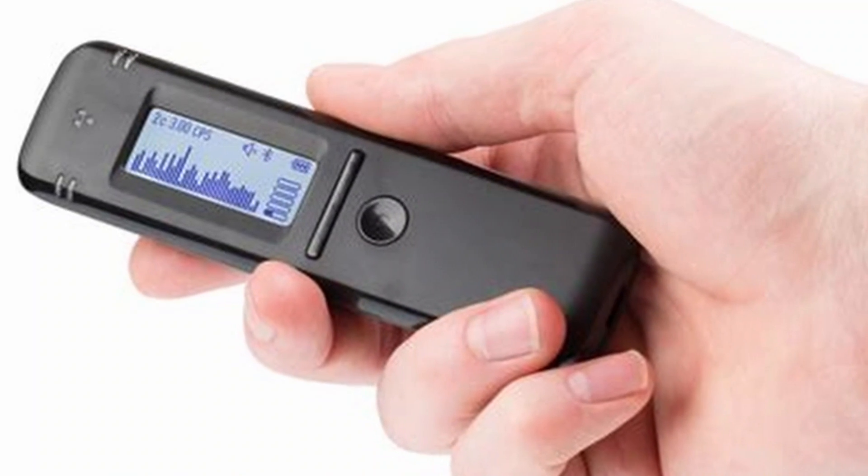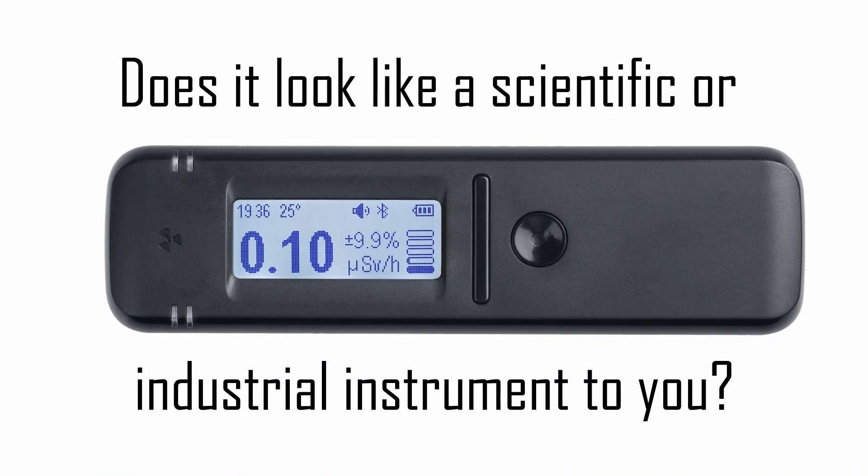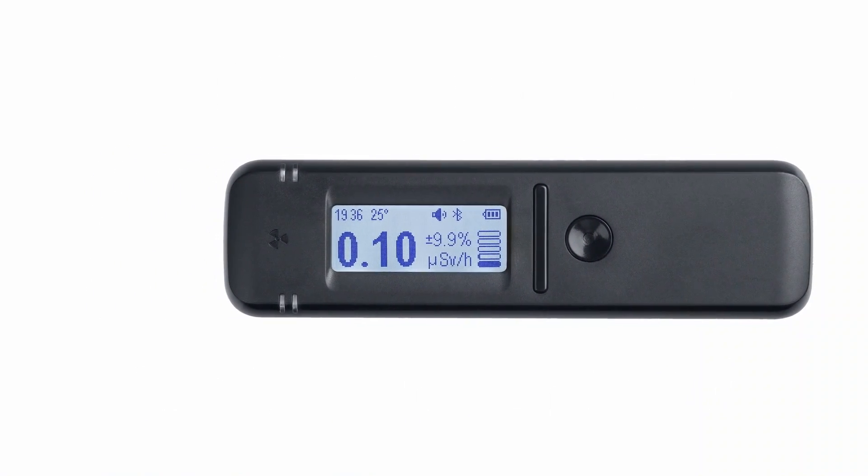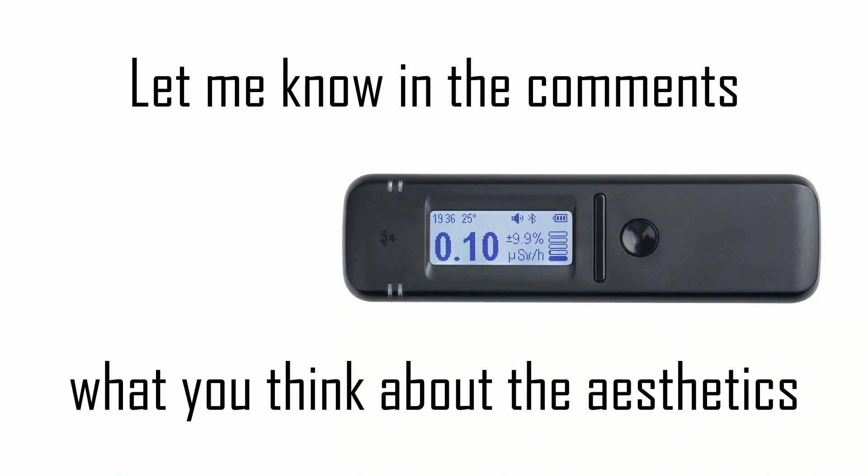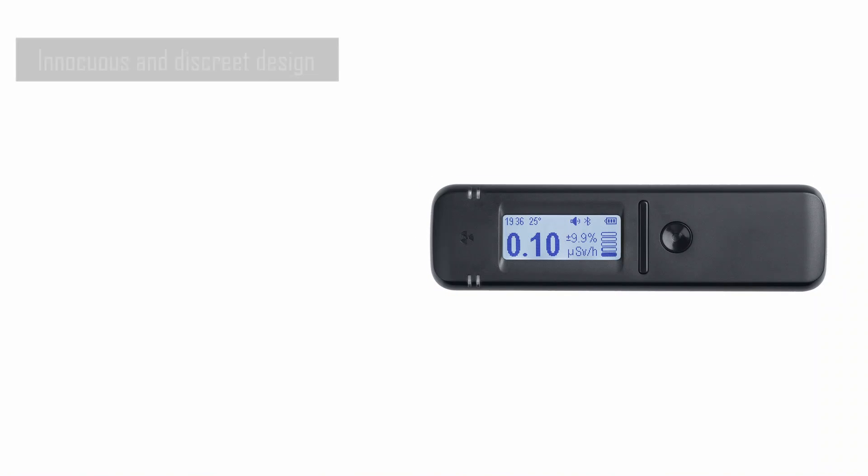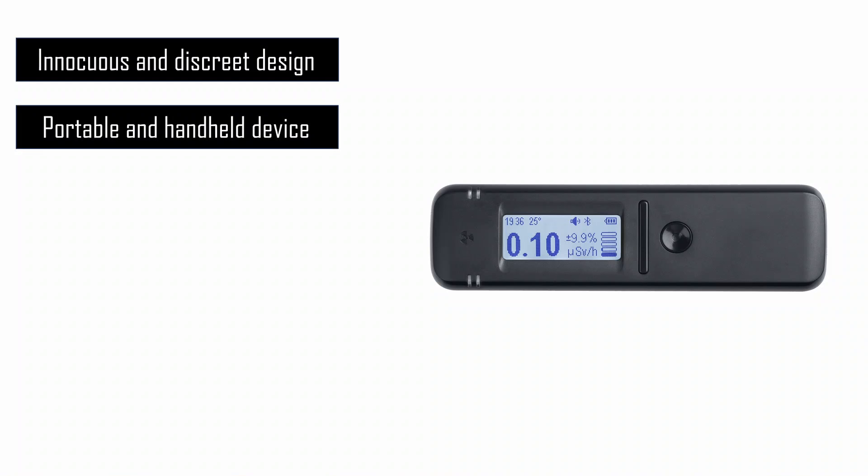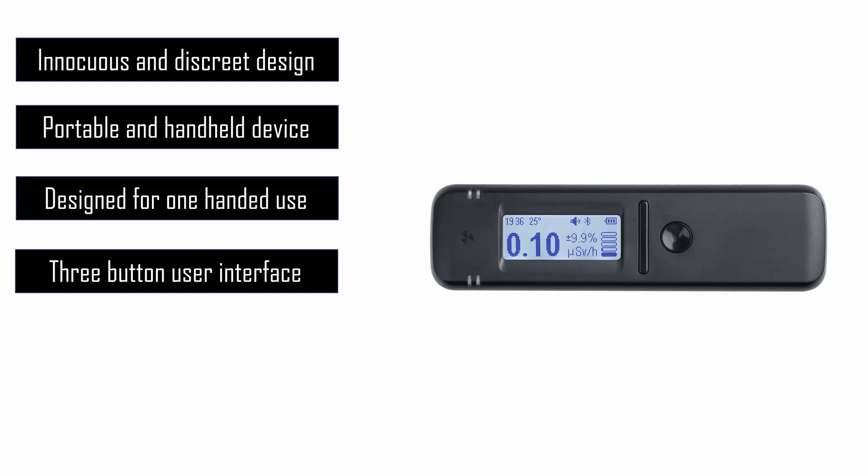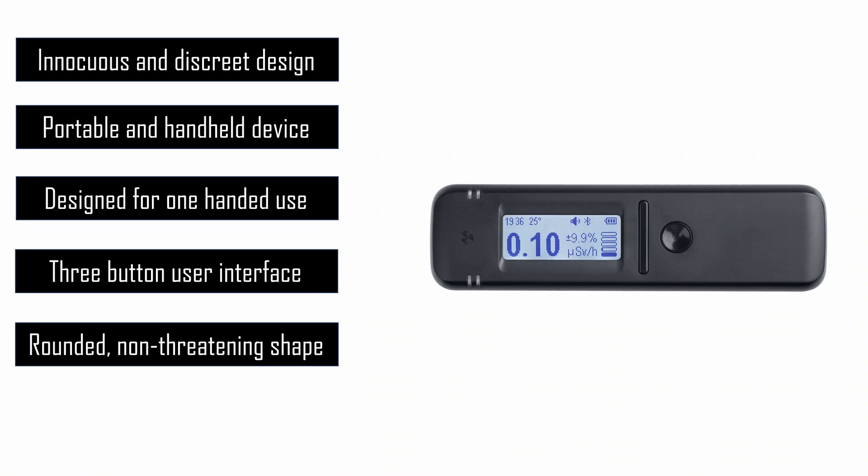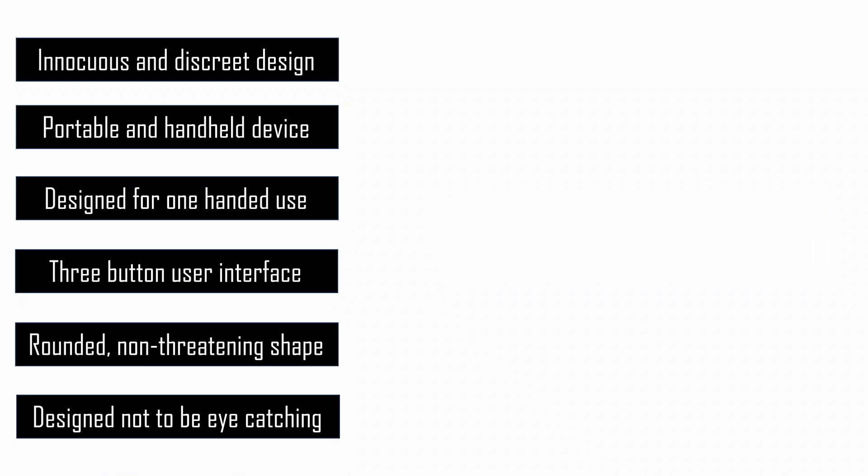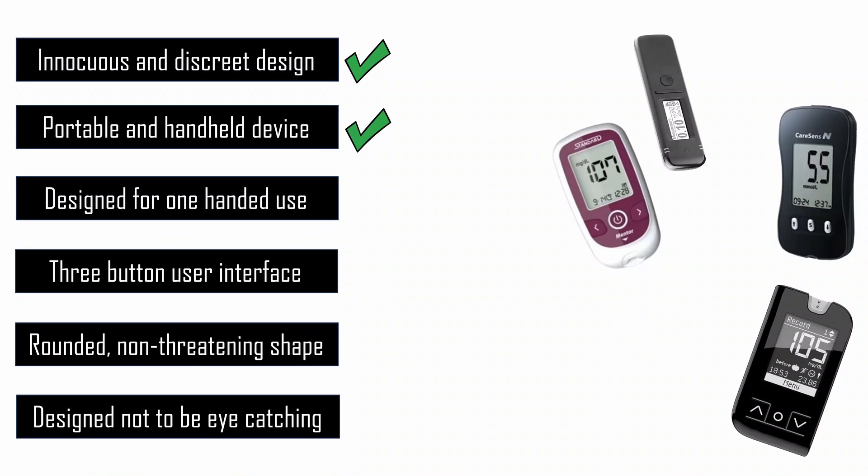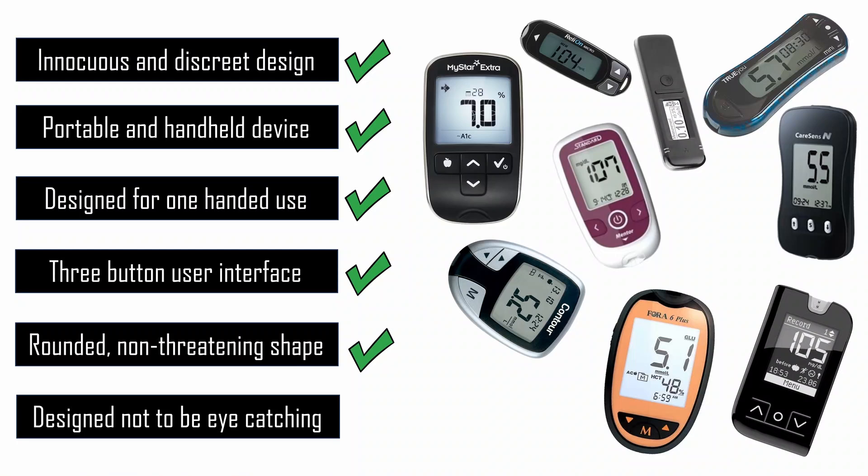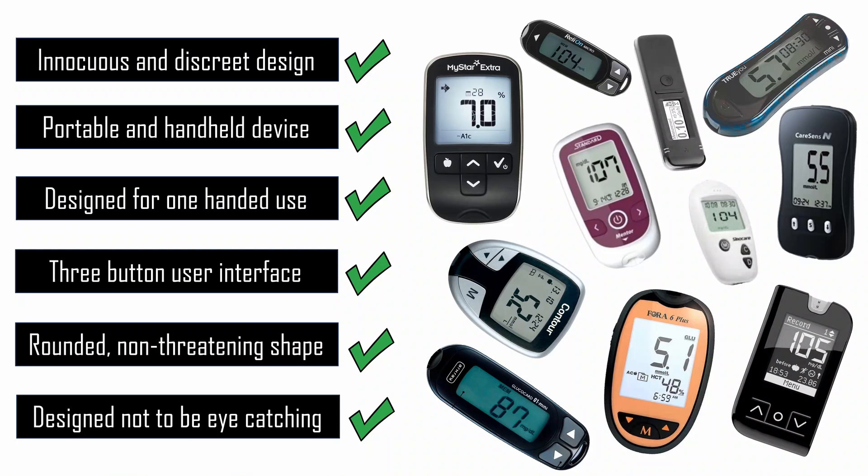I really like the compact size and one-handed operation of this product. But I will admit that I have some reservations when it comes to the design philosophy of the look and feel of the device. The design language appears to have the following aesthetic goals: innocuous and discrete design, a portable and handheld device, design for one-handed use, three-button user interface, a rounded non-threatening shape, and literally designed to not be eye-catching. I'm sure I have seen this exact design language used on another type of product. I can't help but get the feeling that the industrial designer that created this shape had previously designed blood glucose monitors. Because that is what the RadioCode device looks like to me.